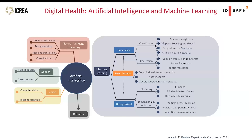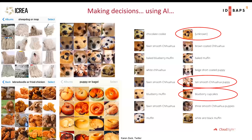When we use machine learning, there are of course many different algorithms available. The most popular currently is deep learning, where convolutional neural networks are used to recognize patterns, images, or text. But besides that, we have many other algorithms.